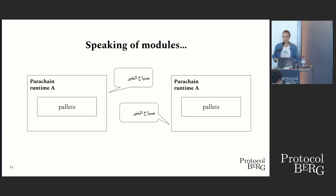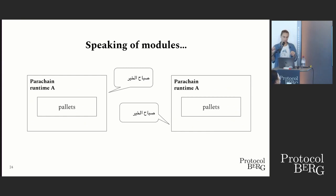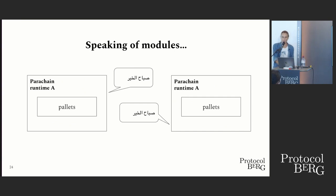In Substrate we call runtime modules pallets — this is really important because the next part we'll take a little dive into is how Substrate chains can be equipped to speak to each other, and by extension how chains secured by Polkadot can actually send messages natively. Let's dive into what these cross-chain protocols might look like.